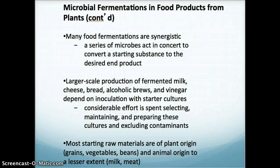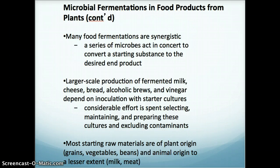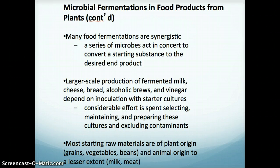Many food fermentations are synergistic, meaning these microbes act together to convert a starting substance to the desired end product. Large-scale production happens with fermented milk, cheese, bread, alcoholic brews, and vinegar. A lot of effort is spent selecting, maintaining, and preparing these cultures to avoid contaminants, especially at large scale. Most starting materials are raw and of plant or animal origin — grains for alcoholic brews or breads, vegetables for pickling or vinegar, and beans. Some fermentations also use animal-origin materials such as milk and meat.